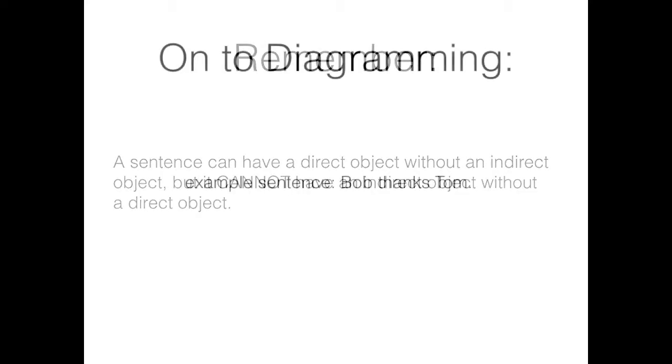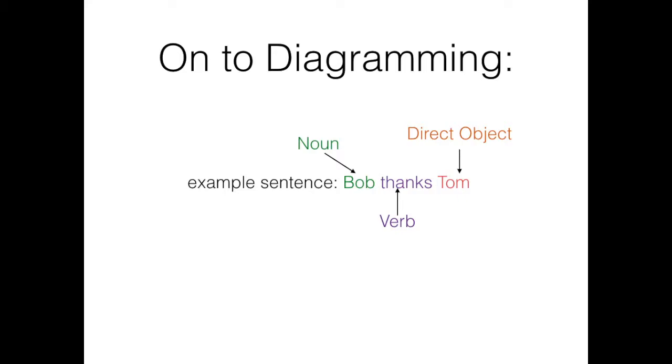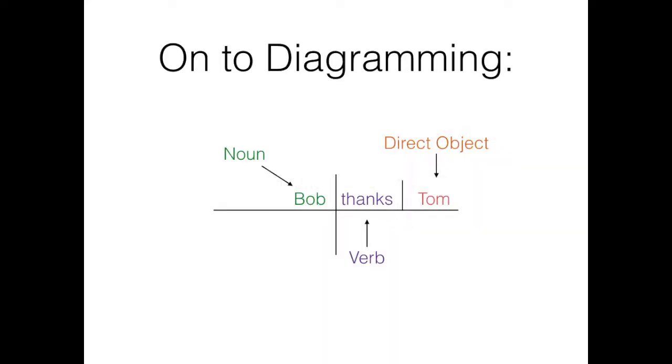To diagram a sentence with a direct object, we'll start by identifying the subject and verb and writing them in their appropriate spots. The sentence we'll start with is 'Bob thanks Tom.' In this sentence, we identify the subject Bob as the doer of the verb thanks. We can ask ourselves who is being thanked to find our direct object, which is Tom. We diagram the subject and verb as per usual, and then the direct object is diagrammed behind a vertical line that comes after the verb, like this. This serves to emphasize the fact that the direct object is receiving the action of the verb.